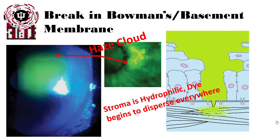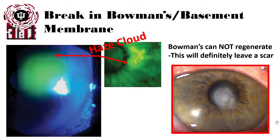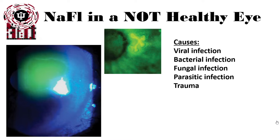Looking at a real human cornea, we start to see a haze or cloud forming around the outside of the primary lesion area. This tells us there is now a break in Bowman's or the basement membrane, allowing fluorescein to distribute throughout the highly hydrophilic stroma. Bowman's layer cannot regenerate, so this will leave a scar. Causes of a break can include viral, bacterial, fungal, or parasitic infections, as well as trauma — the most common cause.